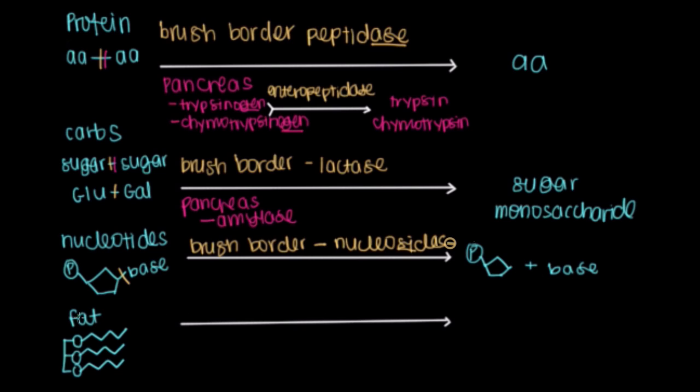Finally, when it comes to fat, we're going to get some help from bile, as I mentioned earlier. And bile, if you recall, comes from our liver and our gallbladder. So these guys are going to release some bile into our duodenum.